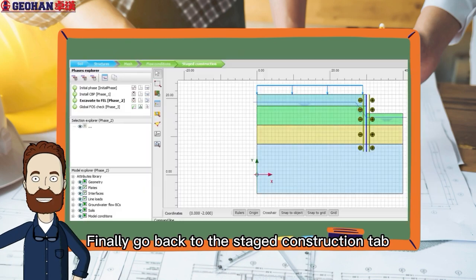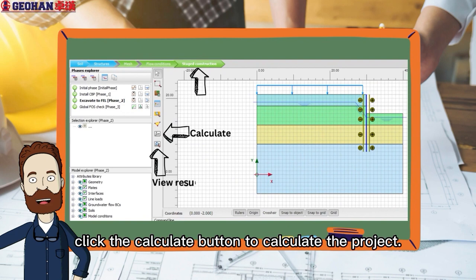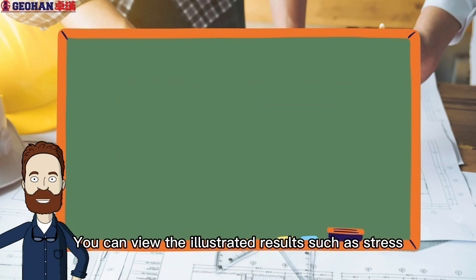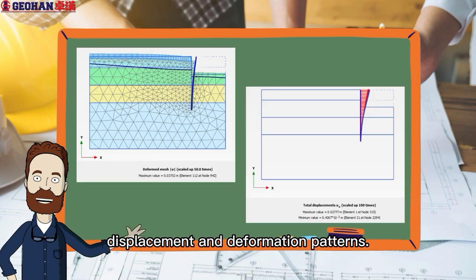Finally, go back to the Staged Construction tab. Click the Calculate button to calculate the project. You can view the illustrated results such as stress, displacement, and deformation patterns.